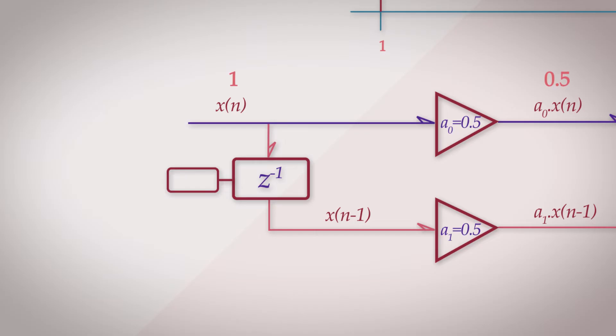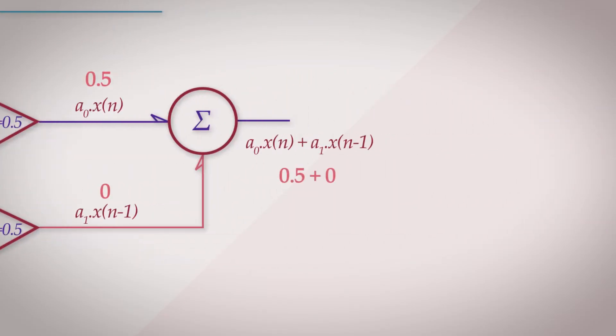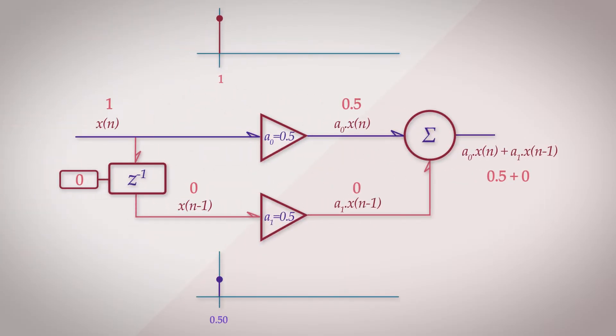It's added to the delayed sample that was previously in the register. Now, since this is the very first pass through the filter, there was nothing that was previously in the register. In this case, a default state of 0 is passed. This value is multiplied by the coefficient a1, and hence the resulting output value is 0.5. So for the first input sample of 1, the output sample is 0.5.